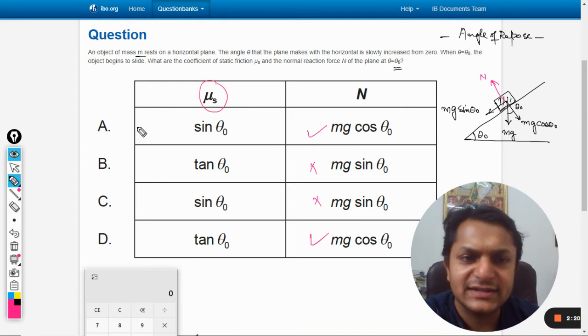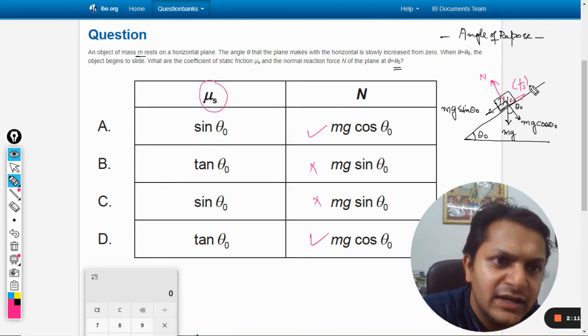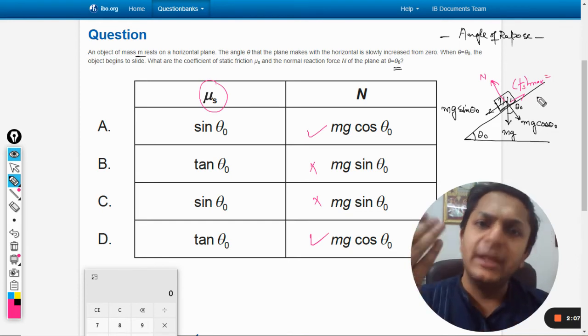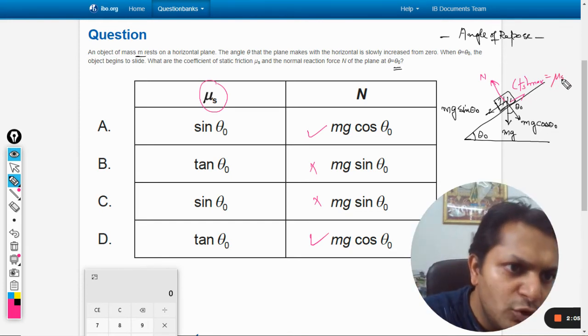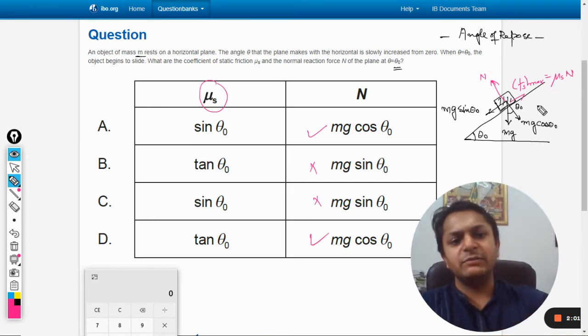What about μs? Because this is the case of limiting friction, it will be having a friction in the back side. This will be the maximum value of static friction, or you can call it limiting friction. It will be μs times the normal that is given by the surface to the body.